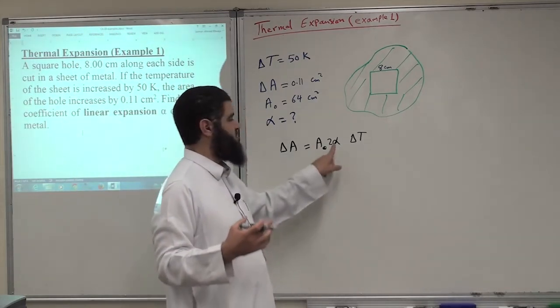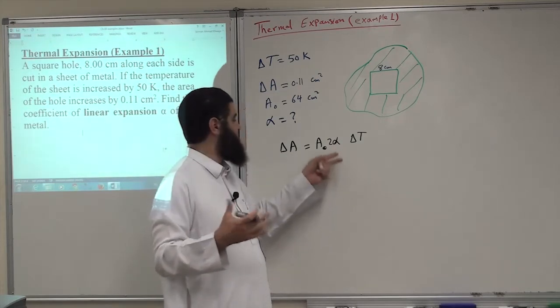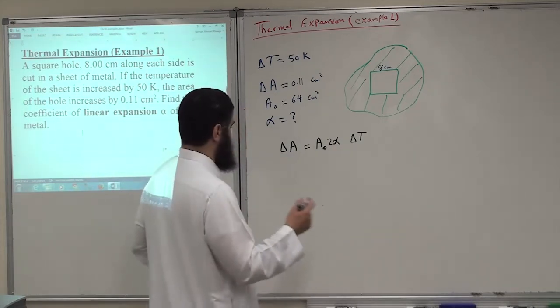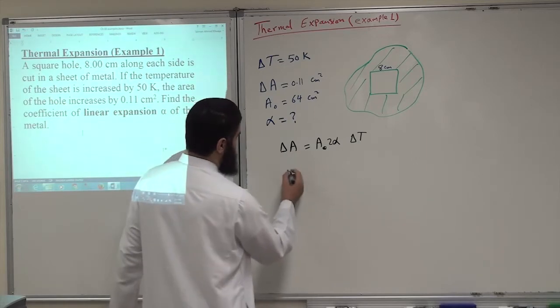If it is linear expansion, we should use 1 alpha. If it is volume expansion, we should use 3 alpha. And in that case, it will be delta volume, of course.